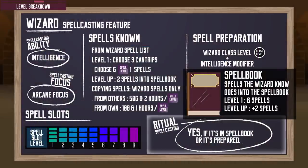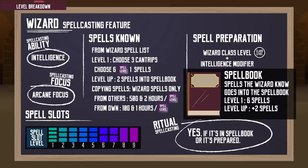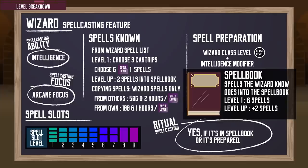With their spellbook, they can cast ritual spells without having to prepare them. Without the spellbook, they will need to have those spells prepared. The spellcasting focus they use is the arcane focus, found in the equipment chapter of the Player's Handbook. The wizard has a steep learning curve — we haven't even gone past level 1 — but once you get your head around the spellbook mechanic, everything else is a breeze.